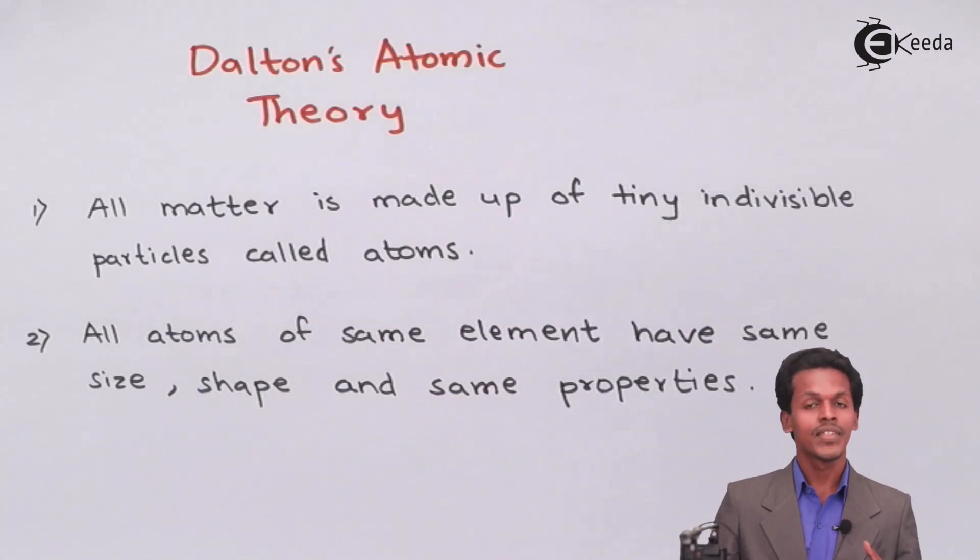The atomic size of a particular copper in a particular element will be the same as other copper atoms which are present in that element or in another copper element will have the same size, and talking about the shape, again it will have the same size, same shape. So this is the thing that an atom follows this kind of theory that Dalton has given to us.